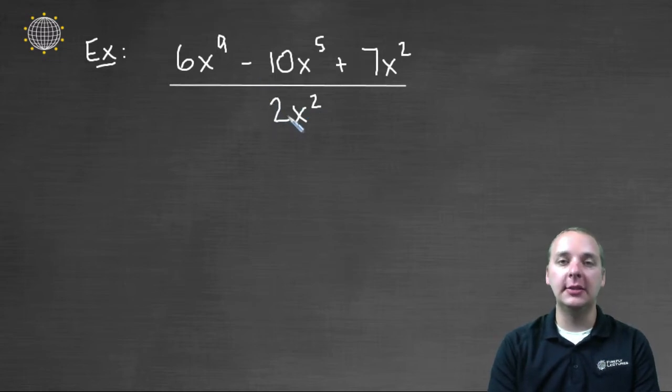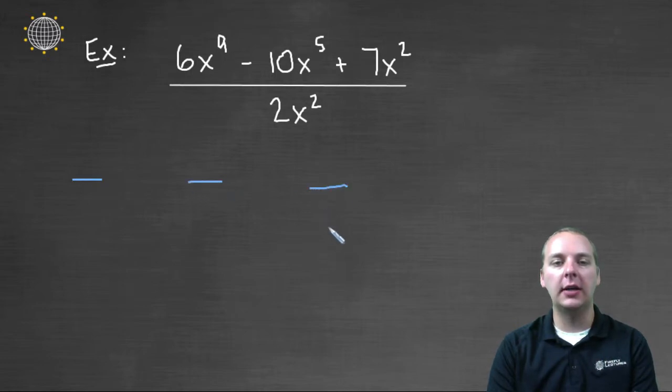And so because I recognize this, and because I recognize that it's specifically a monomial, then I'm going to break this apart into actually one, two, three fractions. So I have one, two, three fractions. The first fraction will be six x to the ninth, divided by two x squared.